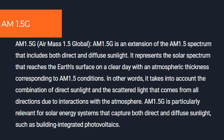AM1.5G is an extension of the AM1.5 spectrum that includes both direct and diffuse sunlight. It represents the solar spectrum that reaches the Earth's surface on a clear day with an atmospheric thickness corresponding to AM1.5 conditions, taking into account the combination of direct sunlight and scattered light that comes from all directions due to interactions with the atmosphere.